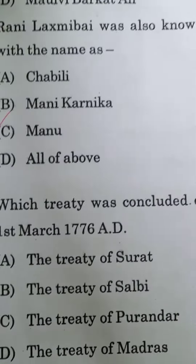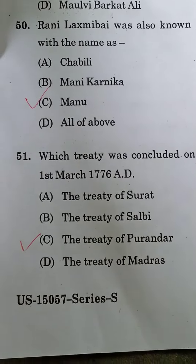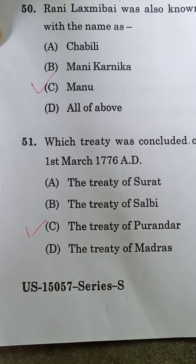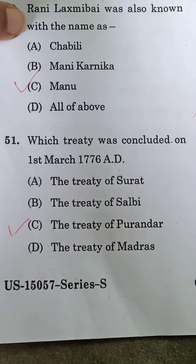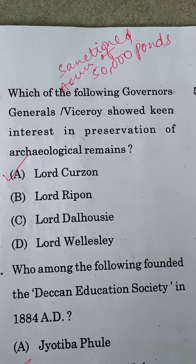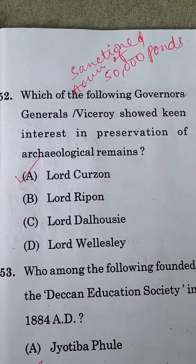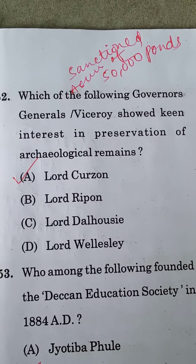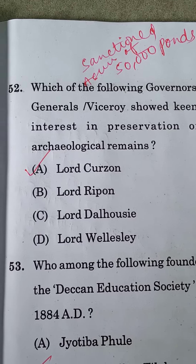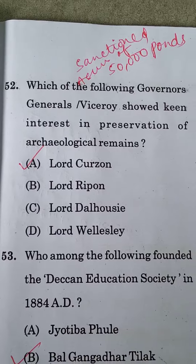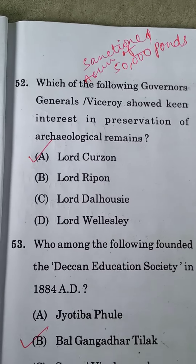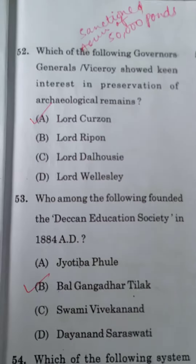Question 51: Which treaty was concluded on 1st March 1776 AD? The Treaty of Purander was concluded on 1st March 1776 AD. Next question: which Governor General or Viceroy showed keen interest in the preservation of archaeological remains? Lord Curzon showed special interest and sanctioned a sum of 50,000 pounds for the maintenance of archaeological remains.